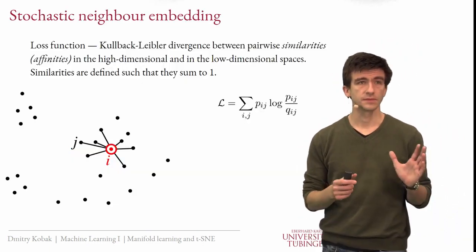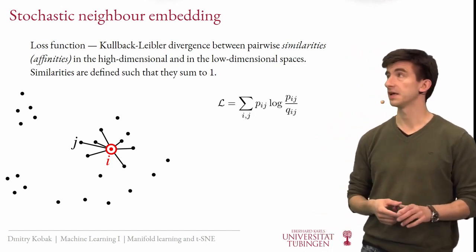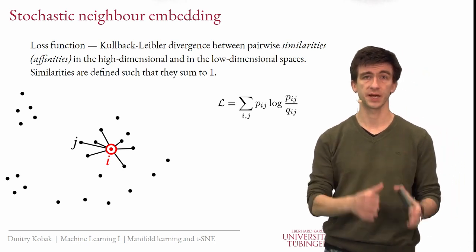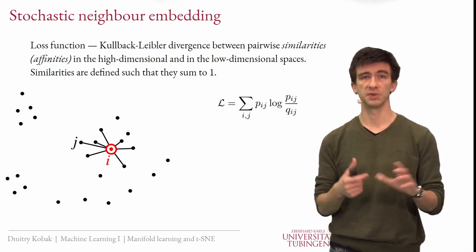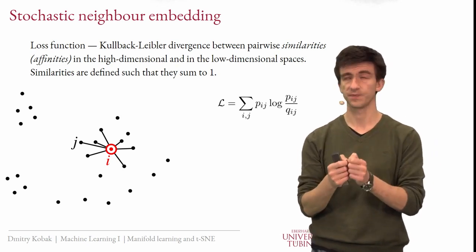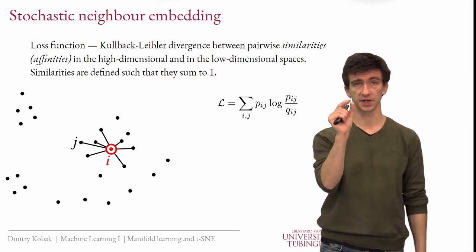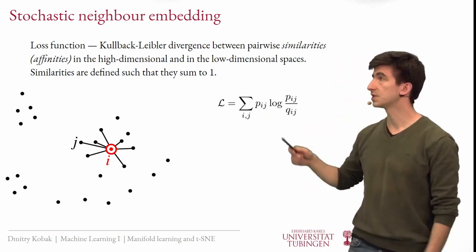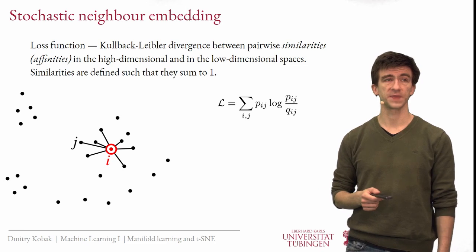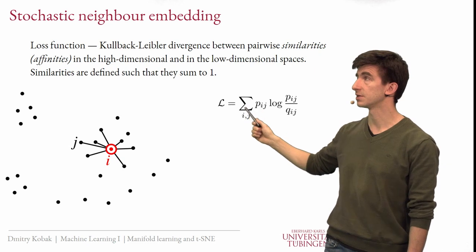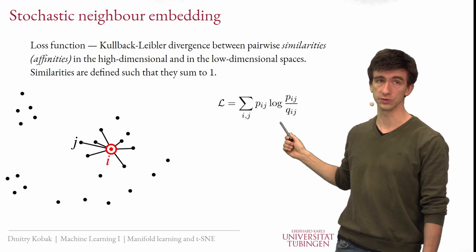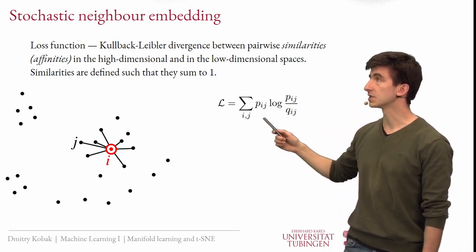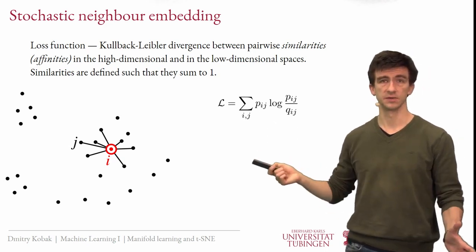How does it work? The idea of Stochastic Neighbor Embedding is that we want to preserve neighbors, and the loss function is the KL divergence between pairwise similarities, or affinities, in the high dimensional and low dimensional space. Similarity is like the opposite of distance — similarity is large when distance is small. We define affinities between all pairs summing to one. High dimensional similarities are called P's, low dimensional Q's. The loss function is the KL divergence: if all P's equal all Q's, this is zero. We pay a high price if we take two close neighbors in high dimensional space and put them far away in the embedding, because they have a large P value. Points that are far away to begin with barely enter this loss function since their P is near zero.